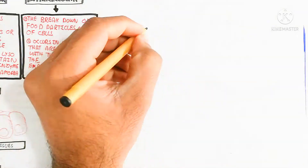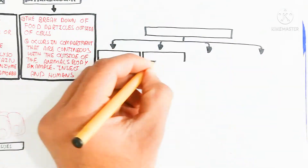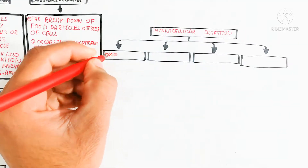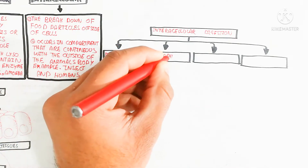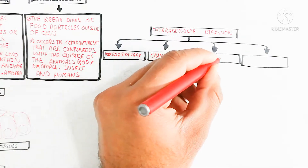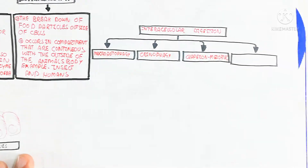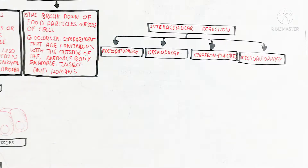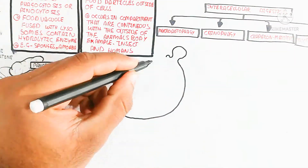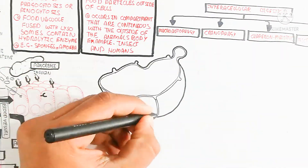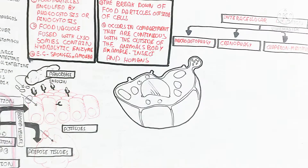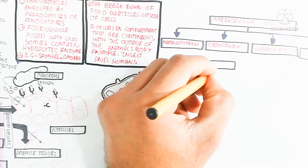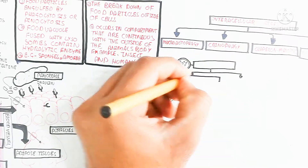Now let's understand intracellular digestion. It has many types: macroautophagy, crinophagy, chaperone-mediated autophagy, microautophagy, and others. To understand these, here I am drawing a cell containing a plasma membrane, lysosomes — which are very important for intracellular digestion — cytoplasm, mitochondria, nucleus, and vacuoles.